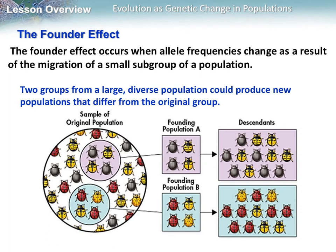The founder effect occurs when allele frequencies change as a result of a migration of a small subgroup of a population. For example, from a large diverse population of ladybugs, a small group leaves to form a new population in a different area, and another group leaves to form a population in a third area. The descendants will look much different than the original population — that is the founder effect.